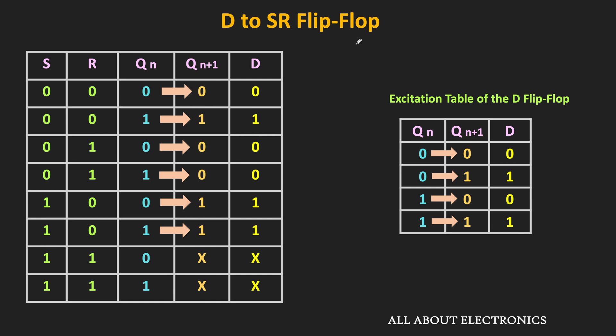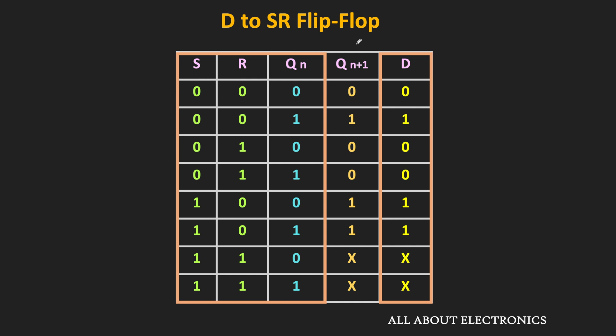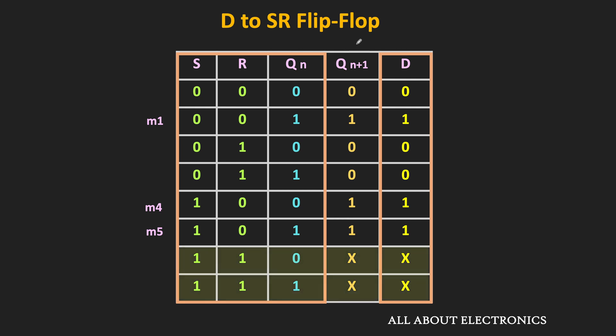Now, once we have this table, let us find the expression of D in terms of S, R and Qn. Because once we get this relation, we can easily design the combinational circuit required for the conversion. If we notice, the D input is 1 for three different input combinations: 001, 100, and 101. The corresponding min terms are M1, M4, and M5. Apart from that, we also have two don't care terms: 110 and 111, with corresponding min terms M6 and M7. Now let us write down all these min terms in the K-map and find the simplified expression of D.